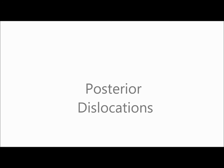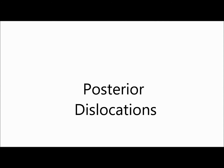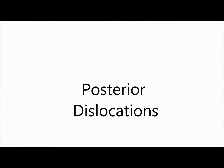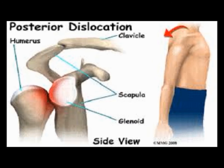Posterior dislocations are less common and often missed. They result from forceful adduction and internal rotation of the shoulder caused by muscle contraction, usually from electric shock or a seizure.